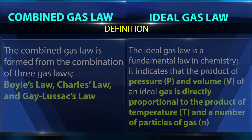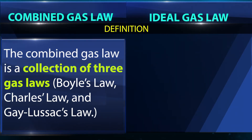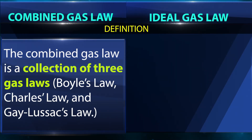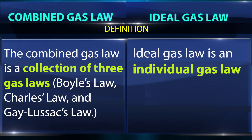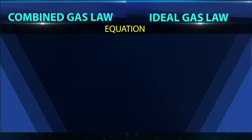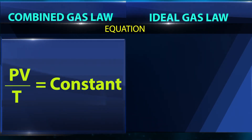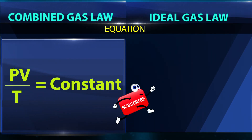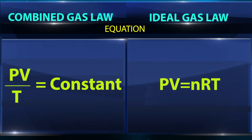The combined gas law is a collection of three gas laws: Boyle's Law, Charles's Law, and Gay-Lussac's Law. The ideal gas law is an individual gas law equation. Equation — Combined Gas Law: PV/T = constant. Equation — Ideal Gas Law: PV = nRT.